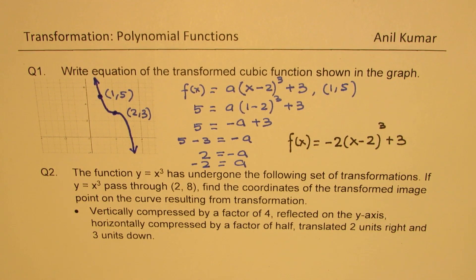Now let's look into question number 2. The function y equals to x cube has undergone the following set of transformations. If y equals to x cube passes through 2, 8, so we are given the point 2, 8, find the coordinates of the transformed image point on the curve resulting from transformation.